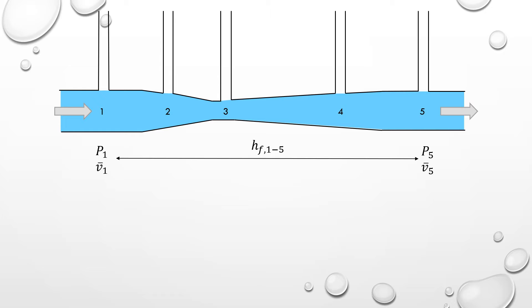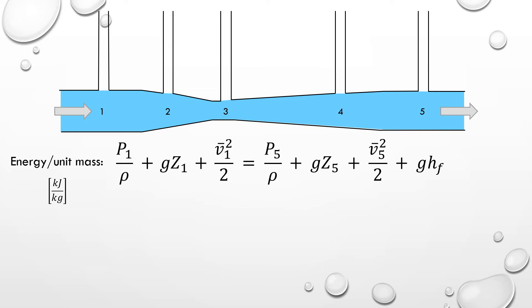For systems with pumps or turbines, additional terms can be added to the energy balance, but since these are not present between the venturi meter inlet and outlet, we will ignore these terms. The mechanical energy balance is generally written in terms of energy per unit mass,